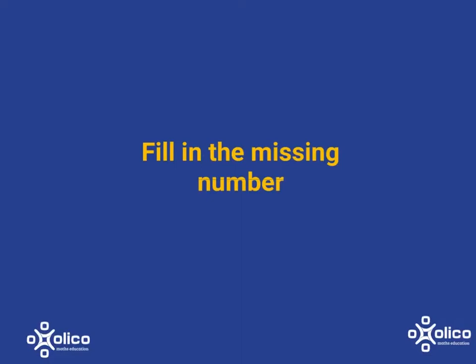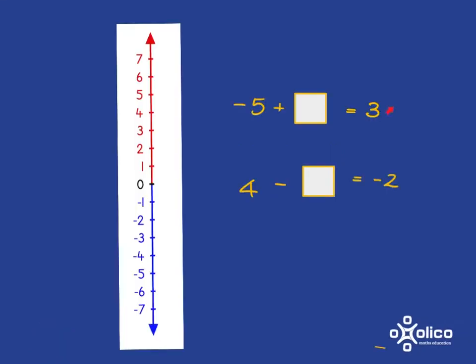We're going to continue thinking about addition and subtraction on the number line, but in this case we're going to fill in the missing number. Let's look at this calculation: negative 5 plus what will get us to 3? The starting point is negative 5, we are adding, and we want to end up at 3. To get from negative 5 to 0 is 5 steps, and then to get to 3 is another 3 steps. So in total we have gone 8 steps to get from negative 5 to 3.